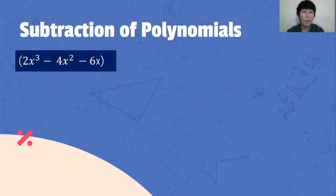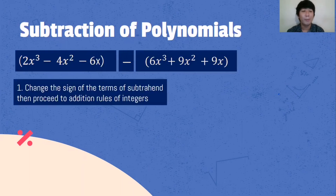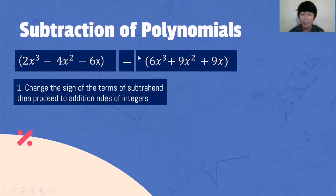Given the quantity of 2x cubed minus 4x squared minus 6x, minus the quantity of 6x cubed plus 9x squared plus 9x. What's the first process? Change the sign of the terms of the subtrahend, then proceed to addition rules of integers.